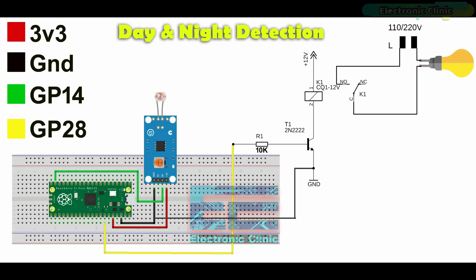The neutral wire from the 110 or 220 volt AC is directly connected with the light bulb, and the live wire from the supply is connected with the other contact of the light through this relay. So that's all about the connections.